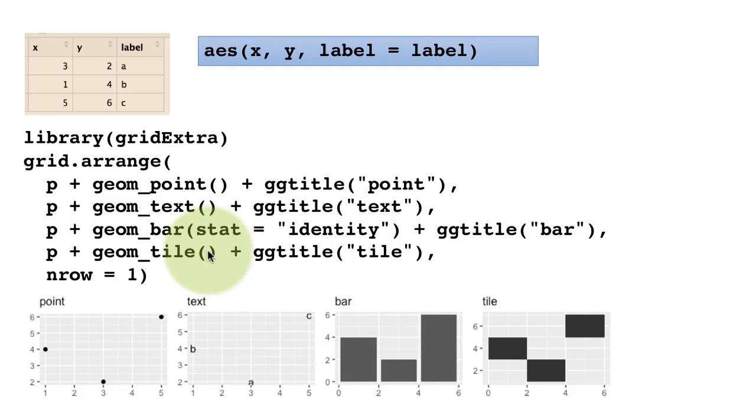Geom_tile puts a tile which is centered at these appropriate points. If you look at the center of each of these tiles you will find that the center corresponds to the first point, second point, and third point. In this course, bar we've used extensively, point we have used extensively. Text we will start using for annotating plots, extensively in fact in the following videos.